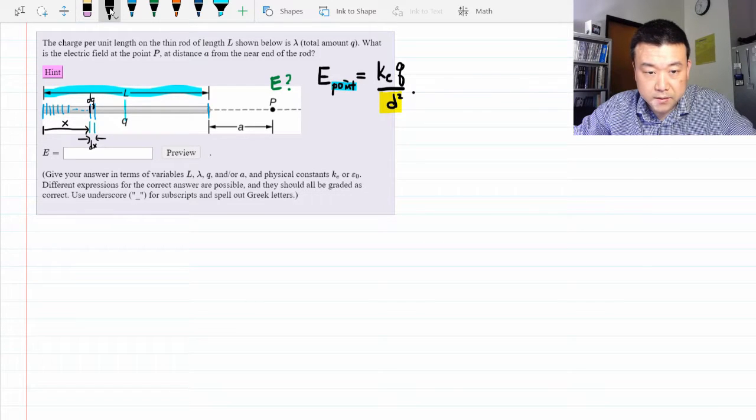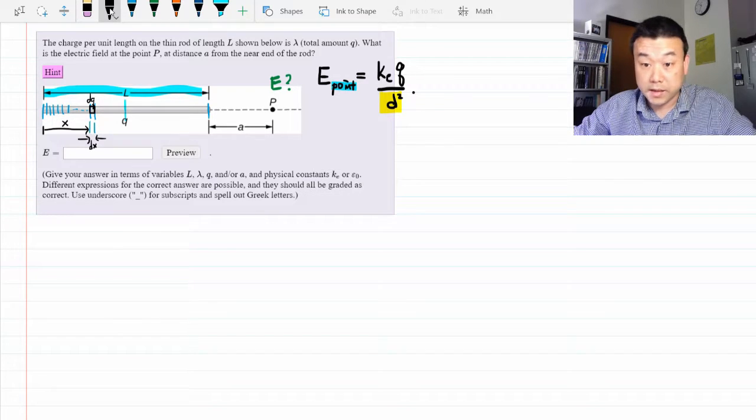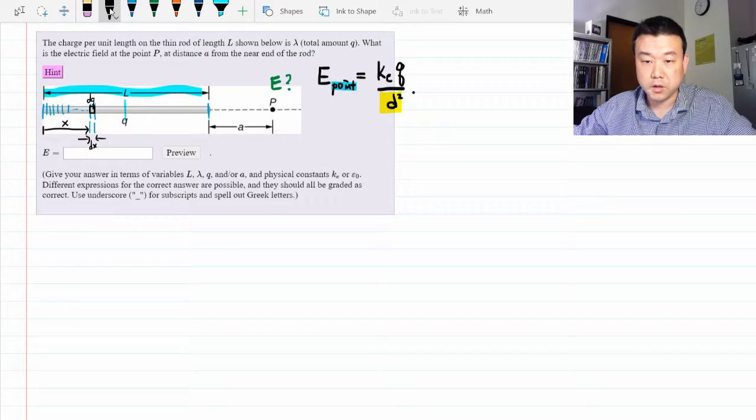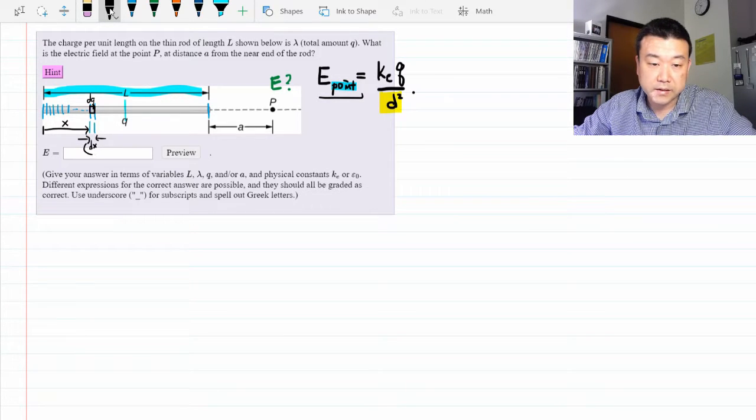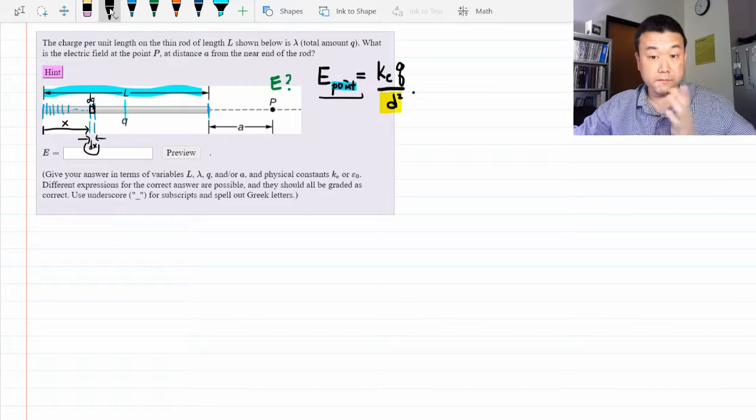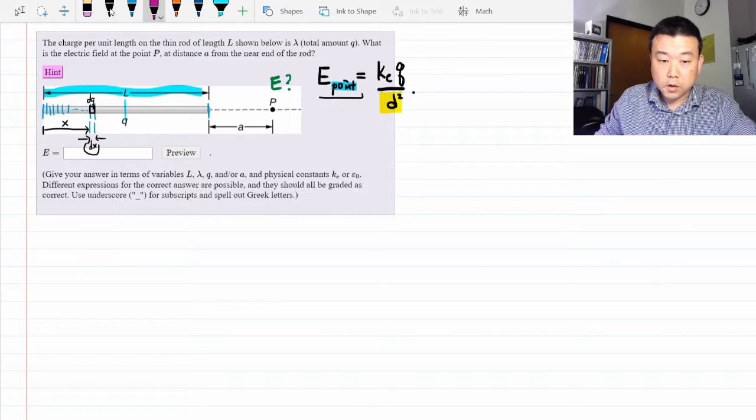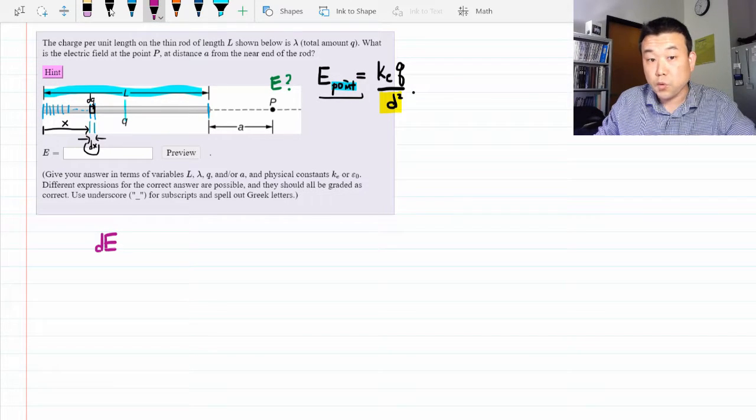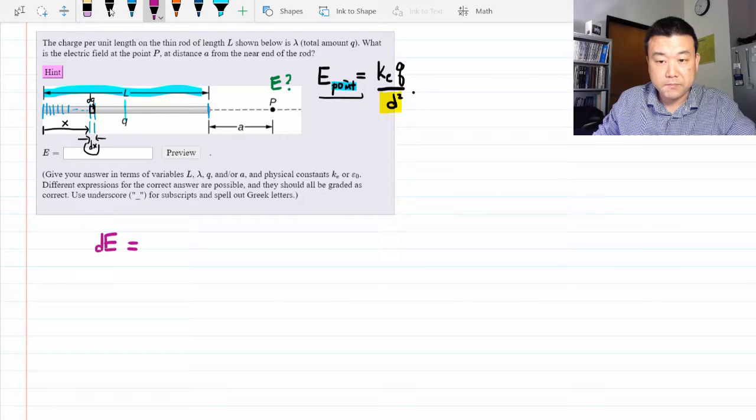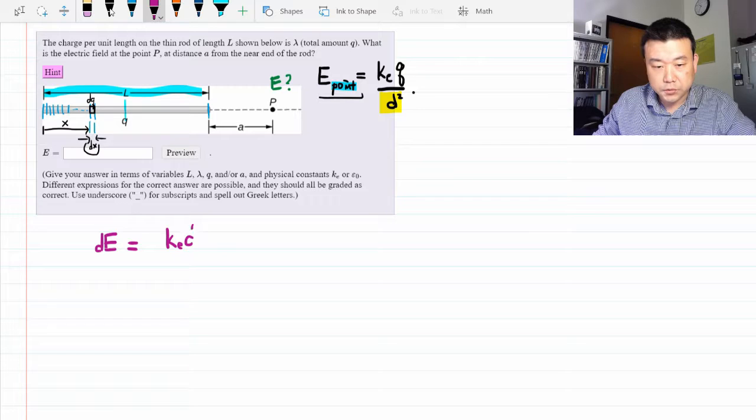For this representative infinitesimal piece of the rod, we can apply Coulomb's law. It's cut into such a small piece that this dx is negligibly small. And we can say this: The contribution to the electric field at point P, due to this small amount of charge, dq, is given by Coulomb's law. Coulomb's constant times dq over the distance squared.